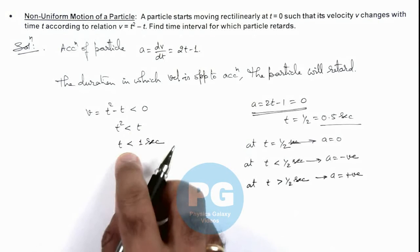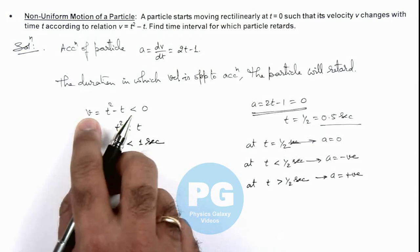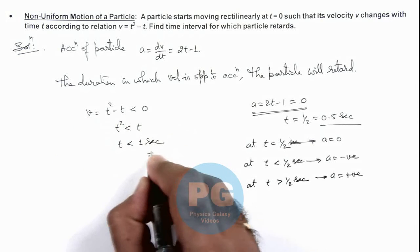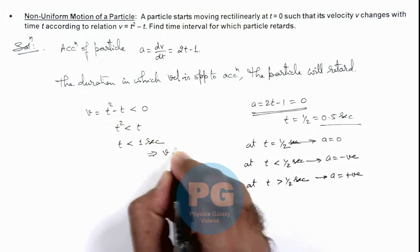So in this situation, when time is less than 1 second, the value of v is less than zero, which means the velocity is negative.